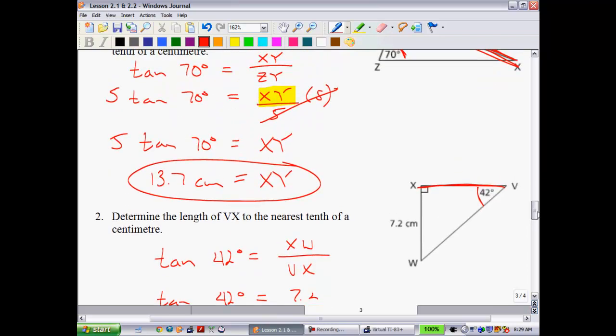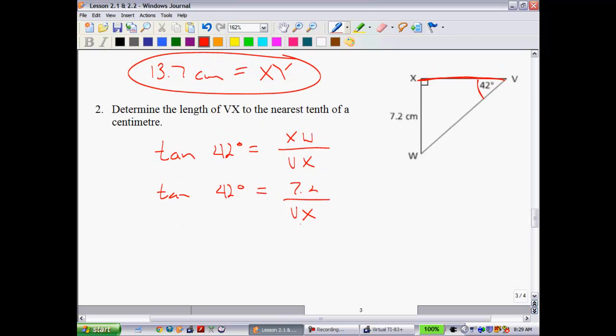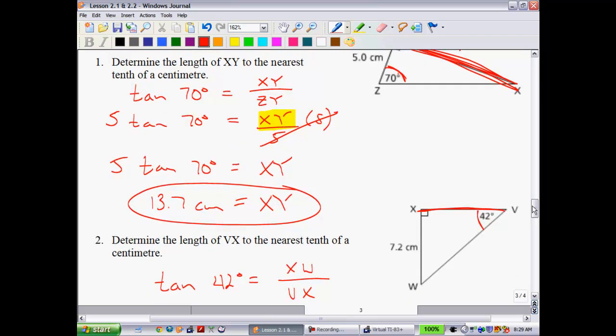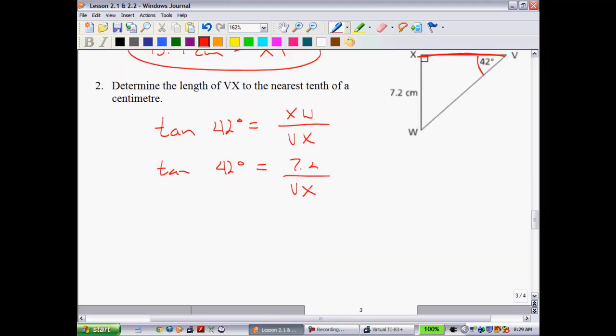So you'll notice that this question is different than the one that we did before in that the variable that I'm looking for is in the denominator. So if I go back up to this question right here, when the variable is in the numerator like it was here, you can just bring the 5 up in front. Essentially, I like to teach my students that this 5 just pops right up here. You can do that. When the variable is in the denominator here, this is what I want you to think. I want you to think that we are going to take these guys and swap. Swap their spots. What we're really doing is we're just multiplying both sides by VX and then dividing both sides by the tangent of 42.